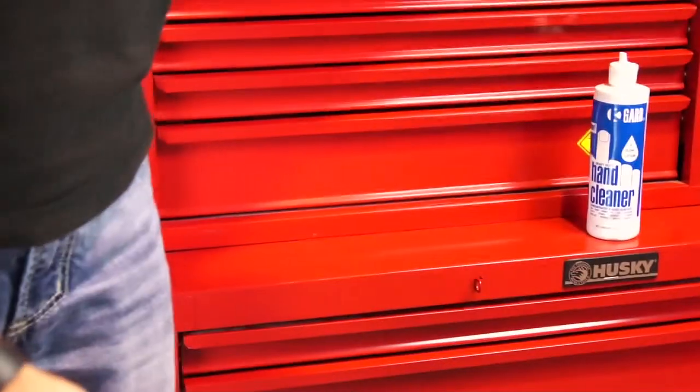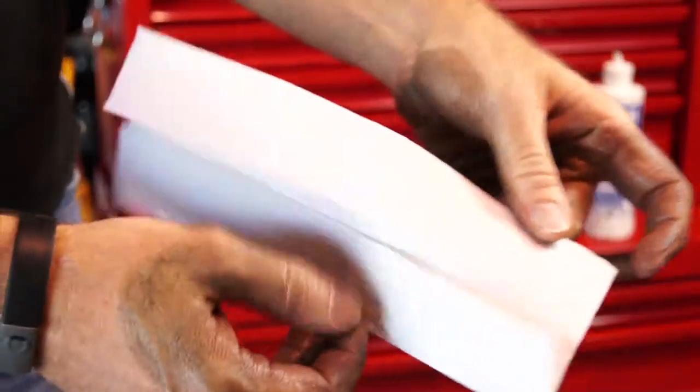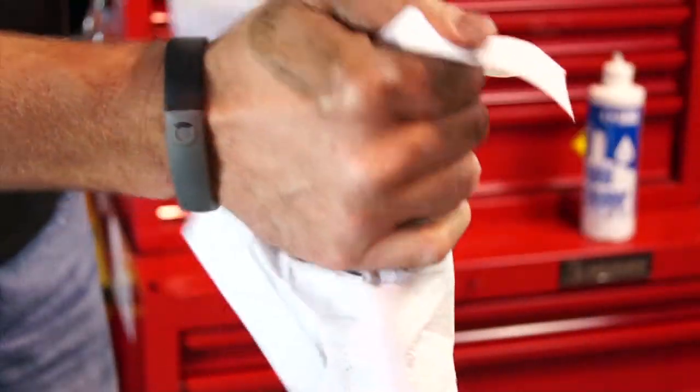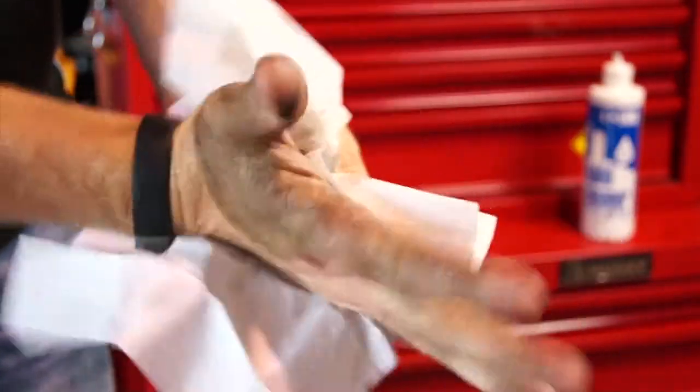The term waterless means that you don't need any water to rinse away the grime you work up with K-Guard. Just simply wipe it away with a paper towel and you can see the mess K-Guard removes from your hands.